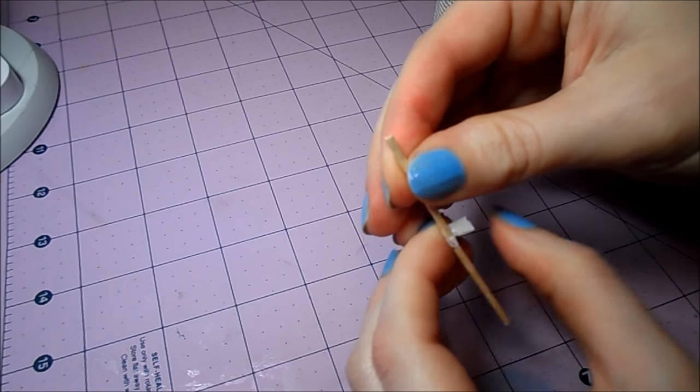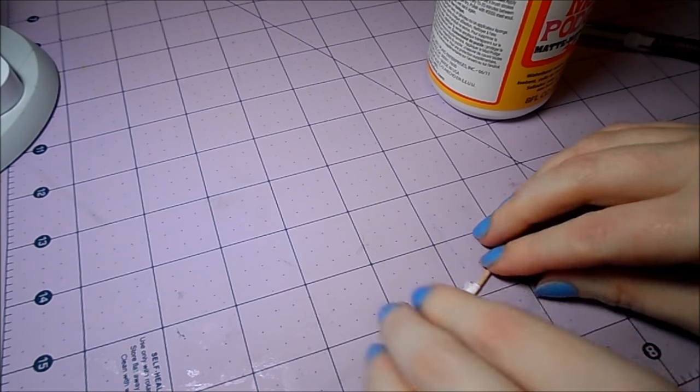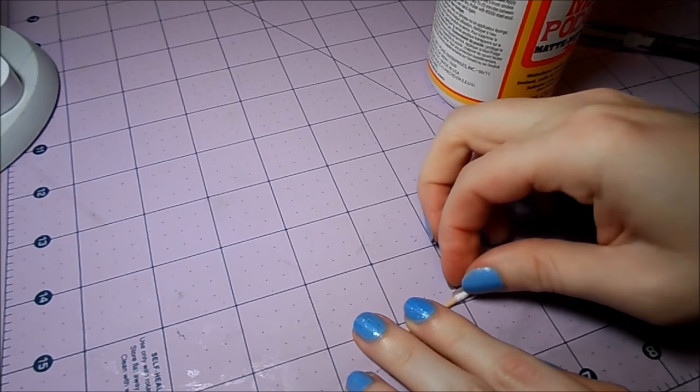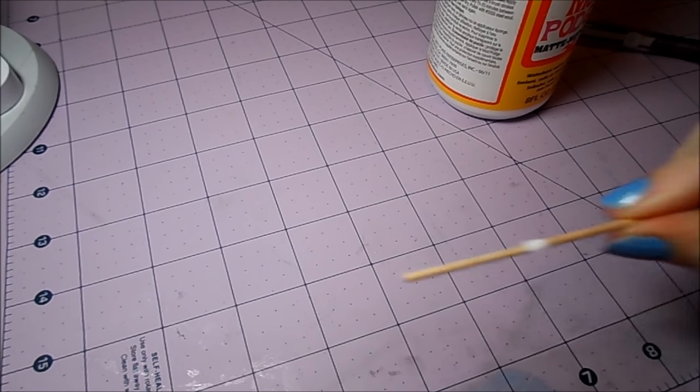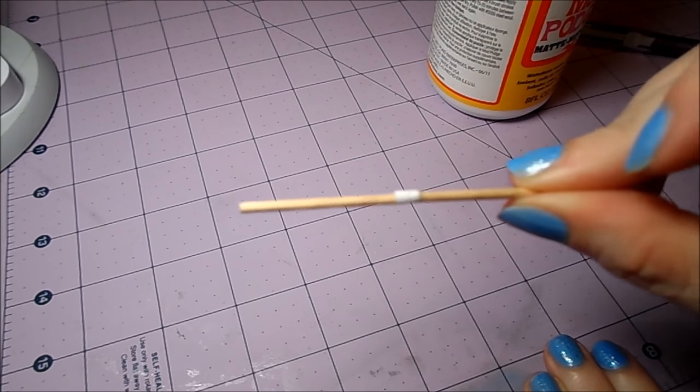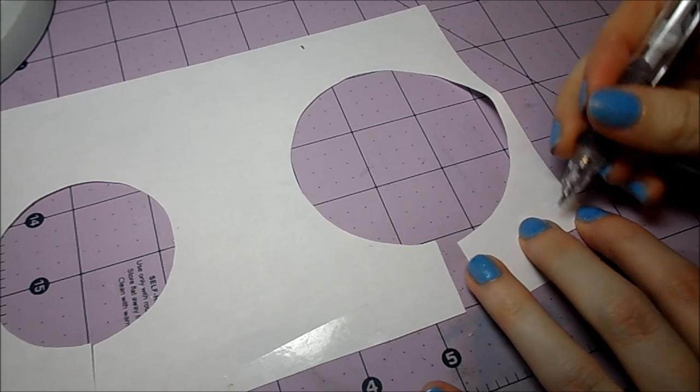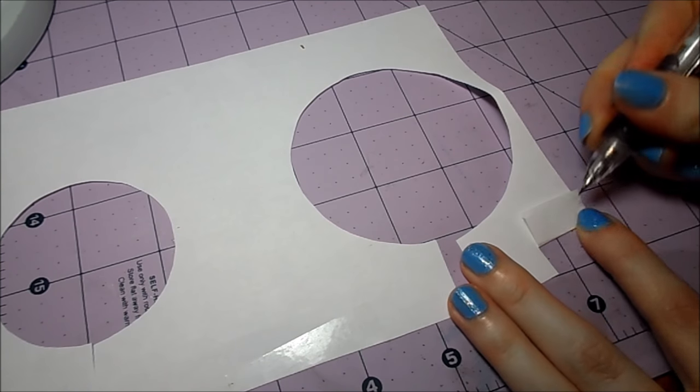Tightly wrap the paper around where the two toothpicks join. Let that dry and cover it again with another layer of glue on the outside of the paper. This will create an arrow with a band in the middle that you can later paint. Just keep in mind that this type of arrow will not be as strong as the ones made from a single piece of wood.